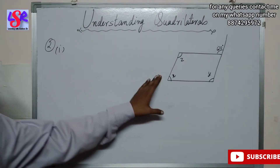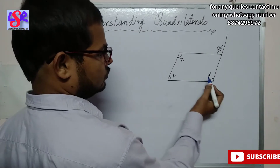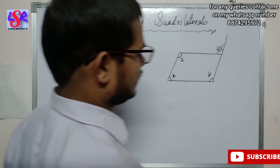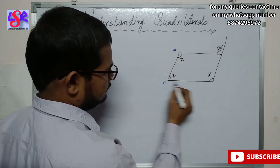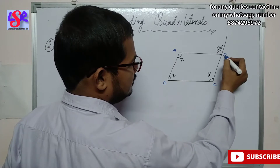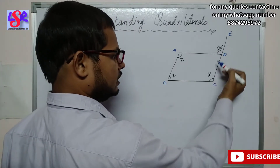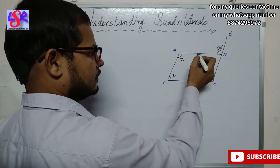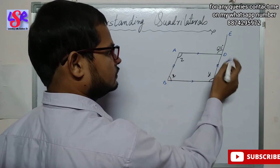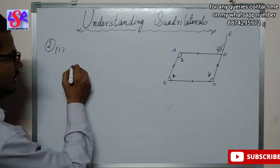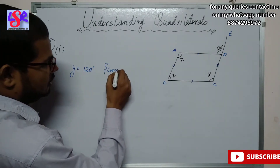Now let us do question number 2, first part. Here we have a parallelogram in which we have to find the values of X, Y, and Z, and we have been given 120 degrees. Let us name the vertices A, B, C, D, and E. Now 120 and Y are corresponding angles since the opposite sides are parallel, so Y equals 120 degrees as corresponding angles.